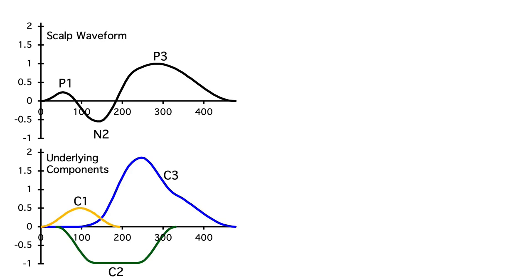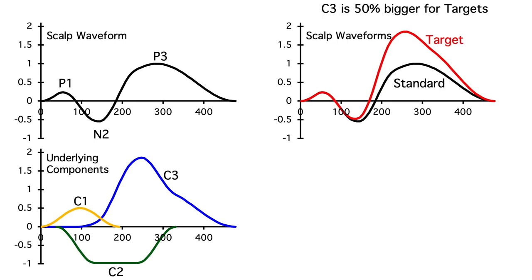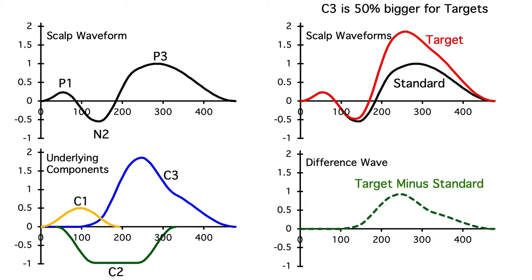Now imagine that we run an oddball experiment, and the magnitude of component C3 is 50% larger for the targets than for the standards. We just increase C3 by 50% and make a new weighted sum to get the scalp waveform for the targets. If we then take the difference between the targets and the standards at each time point, we can recover the component that changed. See how the difference wave has the same shape as component C3?